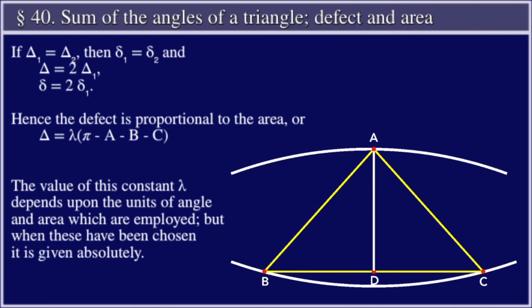Hence the defect is proportional to the area, or Δ is equal to λ times the quantity π minus A minus B minus C. The value of this constant λ depends upon the units of angle and area which are employed, but when these have been chosen, it is given absolutely.